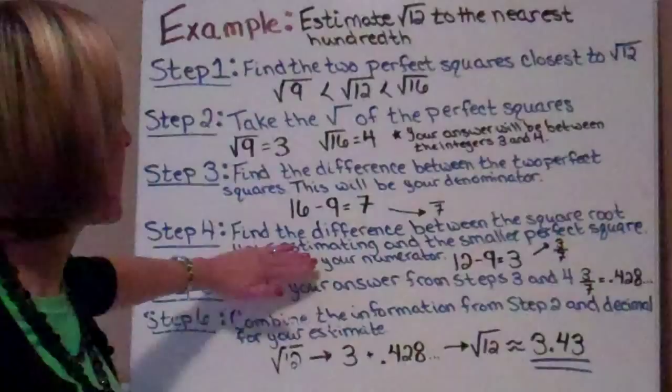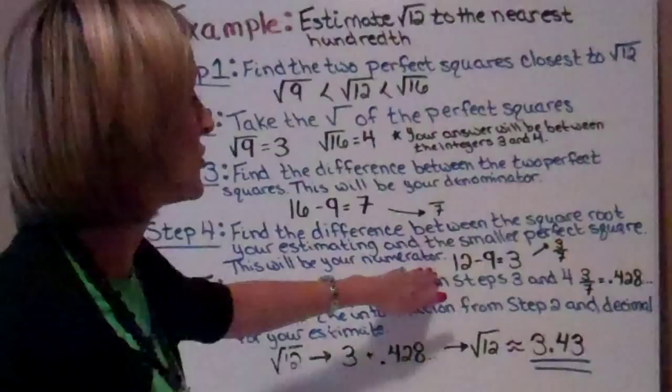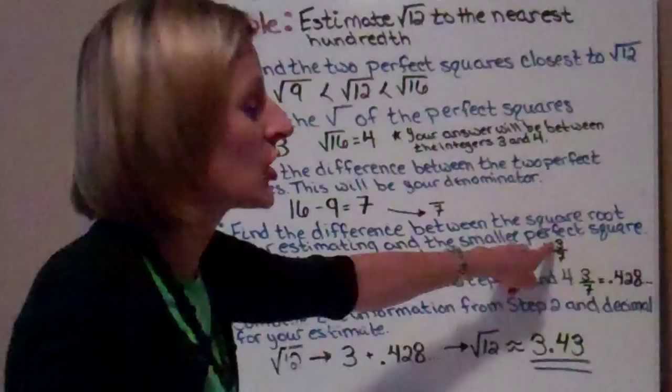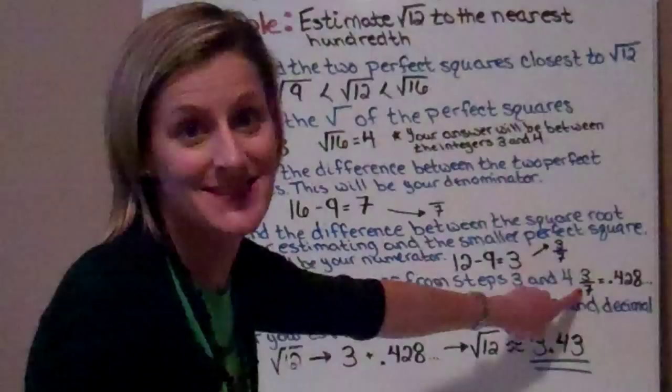Step 4 says to find the difference between the square root you're estimating — this 12 — and the smaller perfect square, which is 9, and that's your numerator. So we have 12 minus 9 which equals 3, and that's going to go on top of our fraction. Step 5 says to divide your answer from steps 3 and 4.